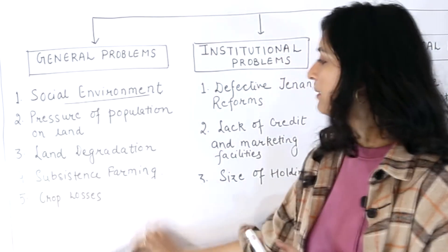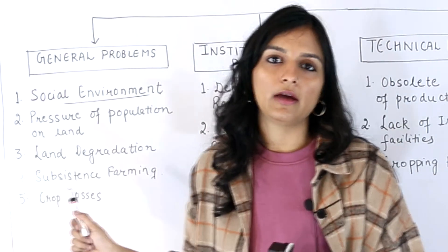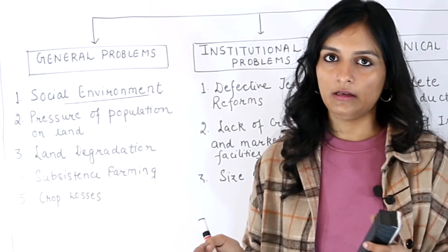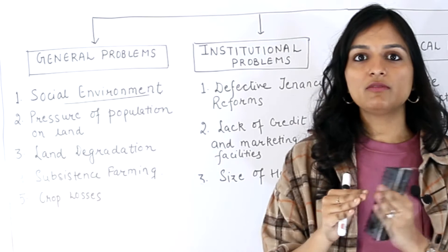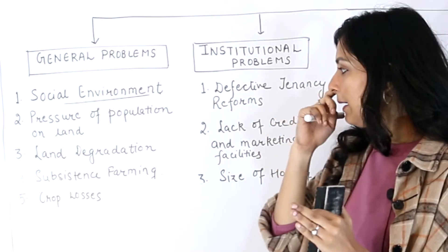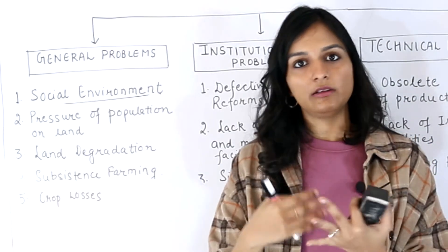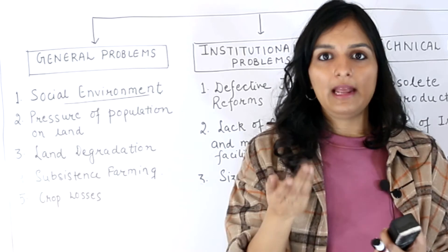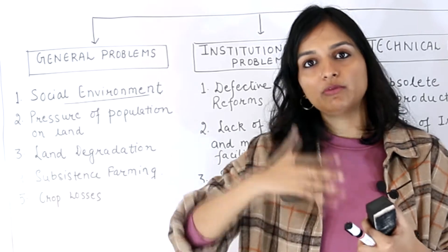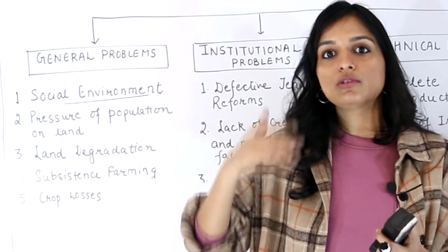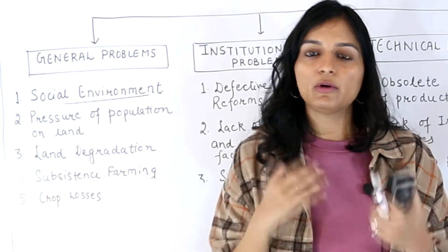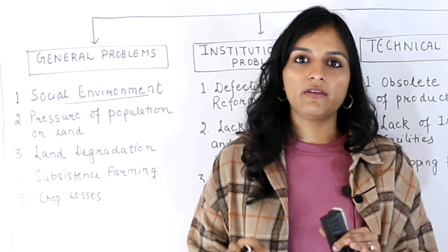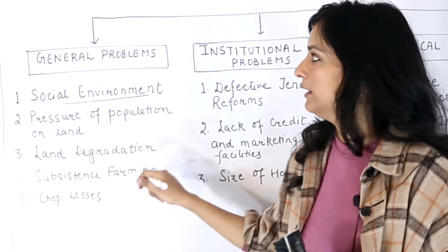Then there is subsistence farming. The problem is that farmers grow crops only for their own consumption and self-sustainability — they don't sell in the market with a commercial motive. They will not increase productivity because if you only grow enough for yourself, there is no need to produce more. Productivity increases only when you have an incentive — to grow more, sell it, and earn more money. That incentive is missing here because of subsistence farming — farming only for your own consumption and self-sustenance. This mindset is difficult to change and falls under general problems.